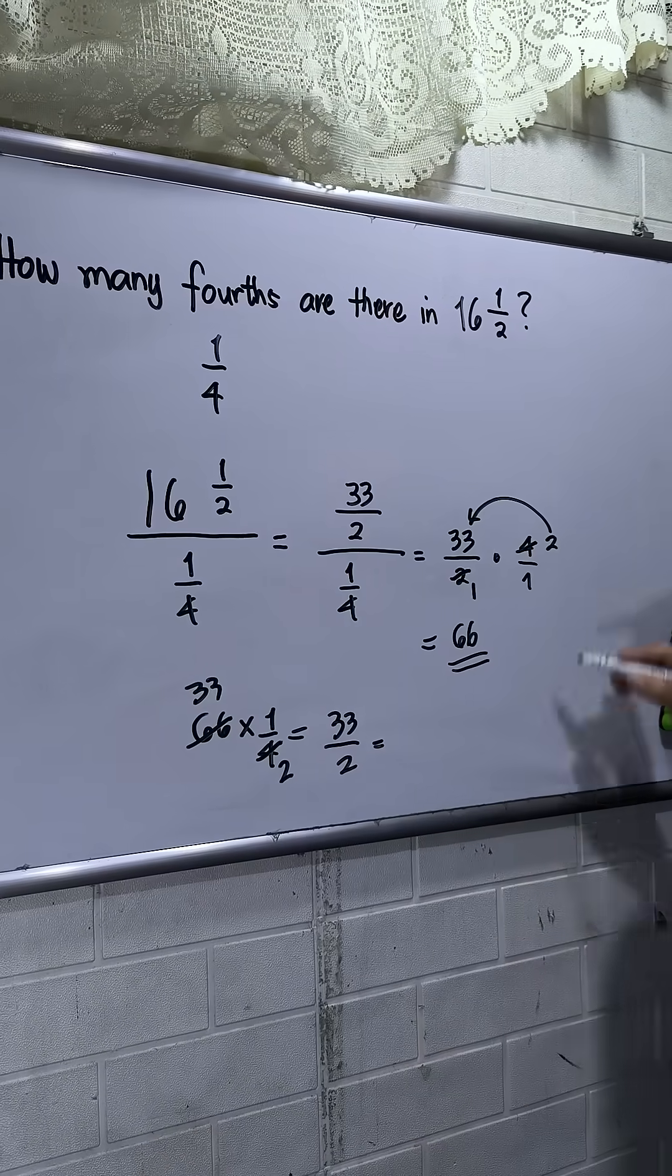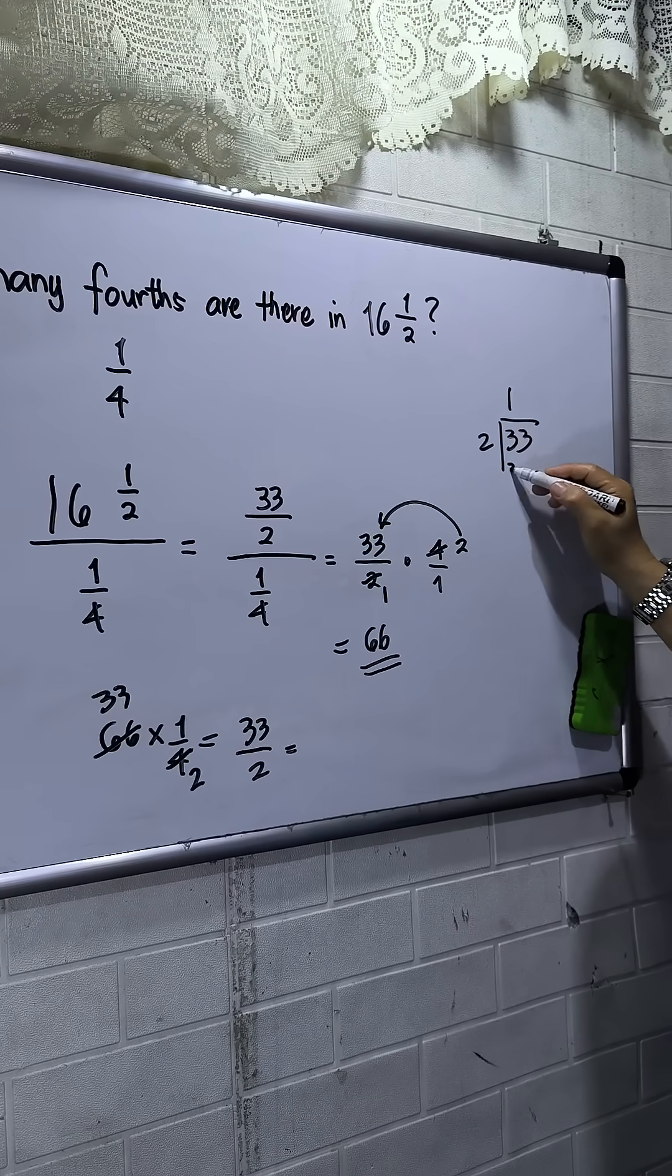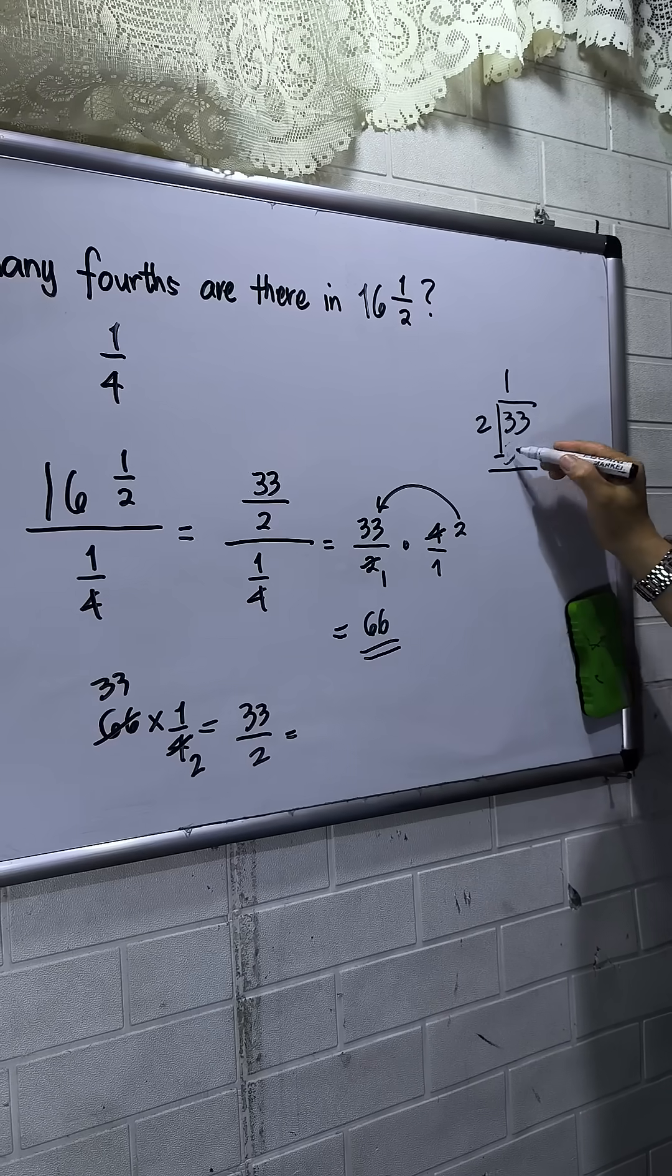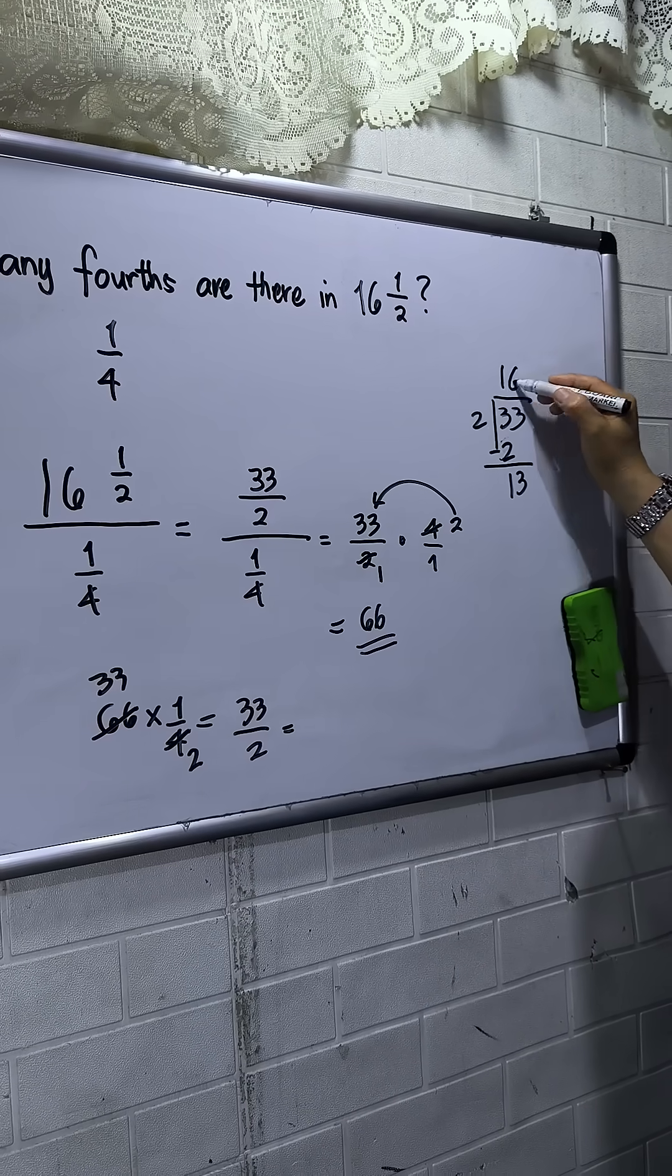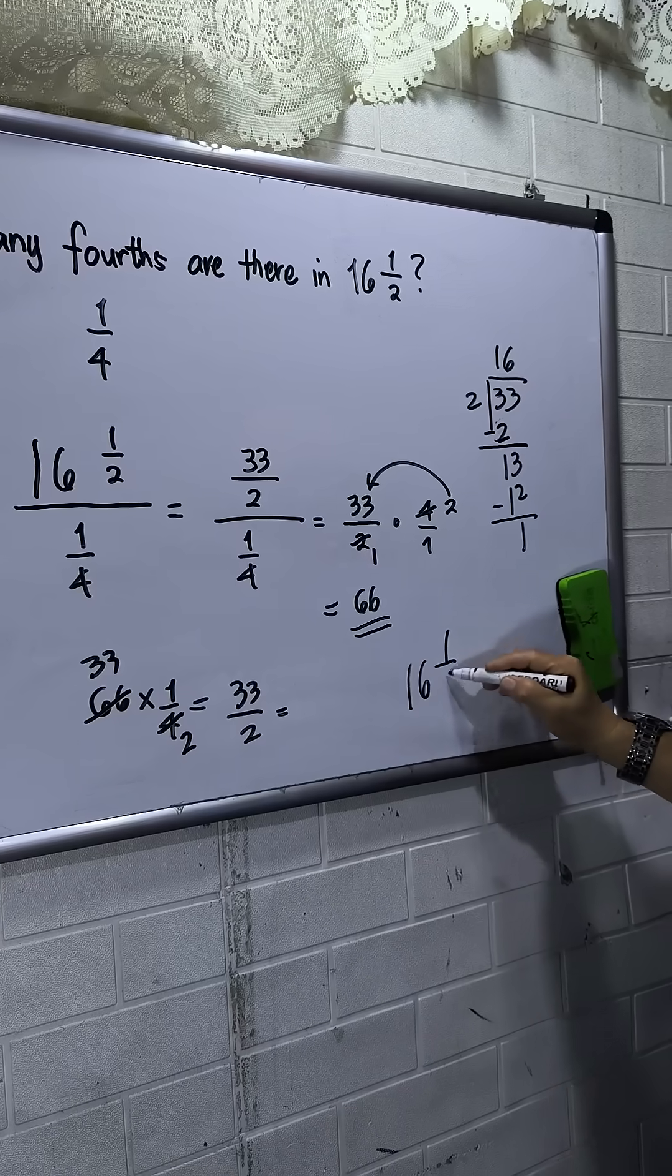So to divide that one, 33 divided by 2. So this will be 1, 3, sorry, 2. 2 and then 1, 3. So this will be 6, then 12, so 1. So this will be 16 and 1 half.